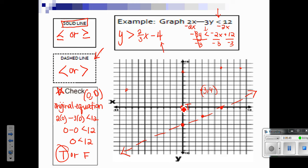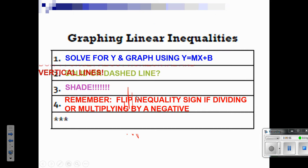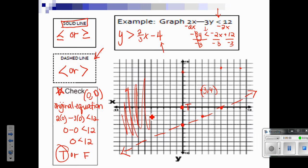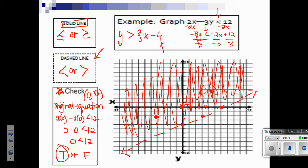But if the point you check is true, that is where you shade. This is where I am shading. If you were to test one of these points down here, you would find that it would be false. And we never shade false regions. We only shade true regions. So you would shade the opposite if you got a false.